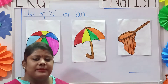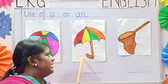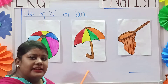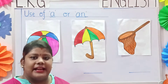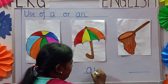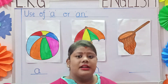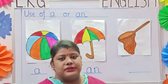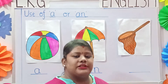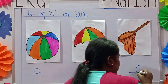Now see the next picture children. It is a picture of an umbrella. Umbrella starts with the letter U, so we will write 'an' — an umbrella. Now see the next picture. It is a picture of a net. Net starts with the letter N, so we will write 'a' — a net.